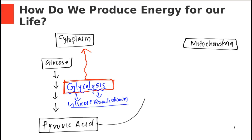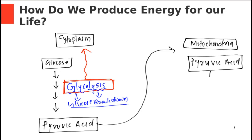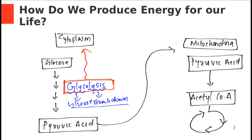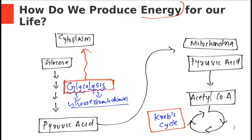The pyruvic acid is transported to the mitochondria, where it is converted to a different molecule known as acetyl coenzyme A. The acetyl coenzyme A then goes into a cyclical reaction — different reactions occurring repeatedly in a cycle — and this cycle of reactions is known as the Krebs cycle. Why these reactions occur and how we produce energy from them is our discussion topic today.